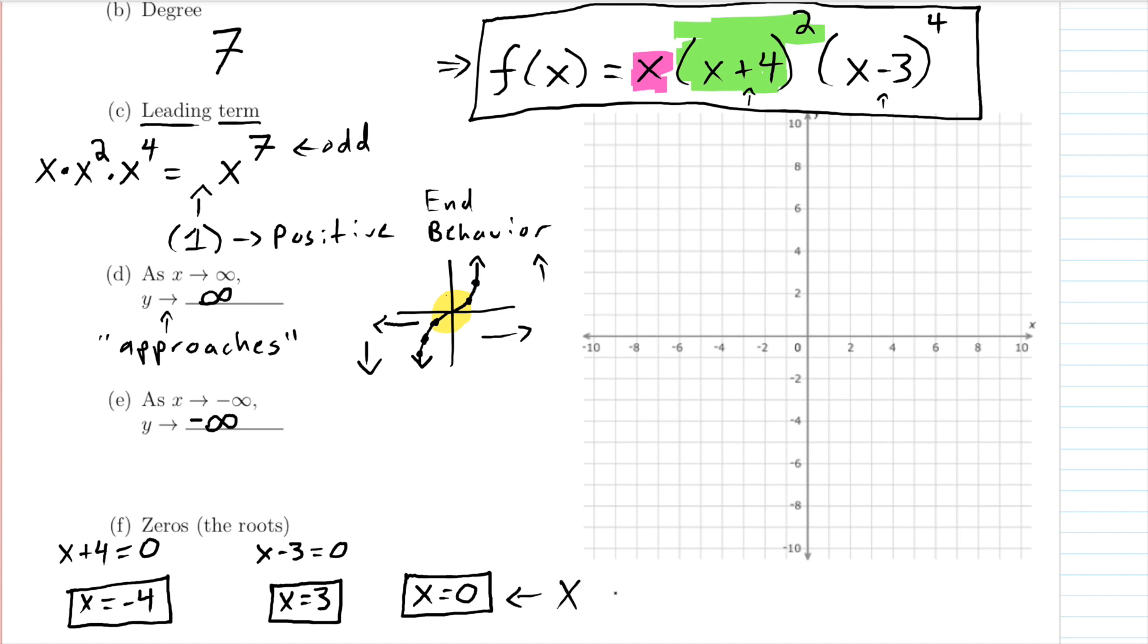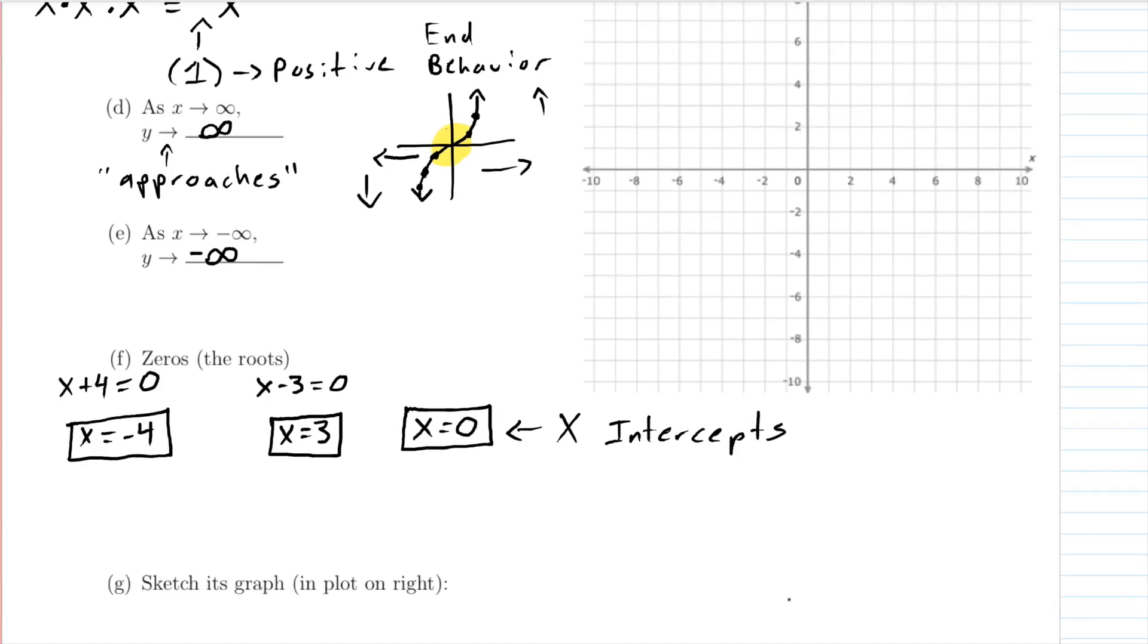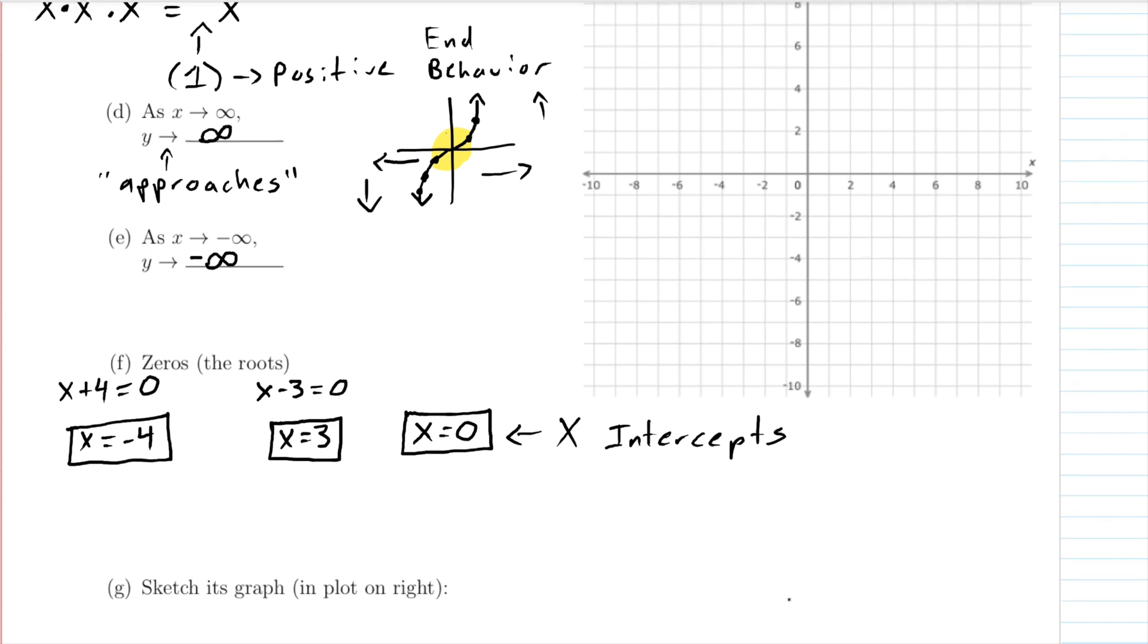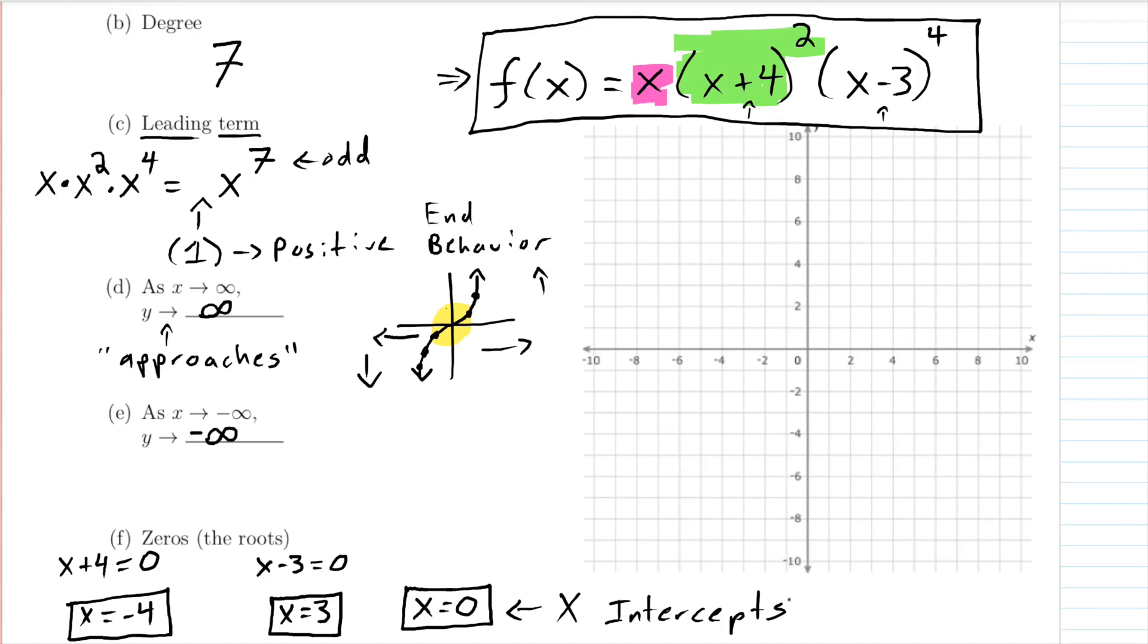In terms of the graph, these are going to be the x intercepts. So the next part of this question says to sketch this graph. Let's see what that looks like. We know the x intercepts, we know that it's going to go through this point, we know that it's going to go through x being negative four, that's going to be an x intercept. And x equals three is going to be an x intercept.